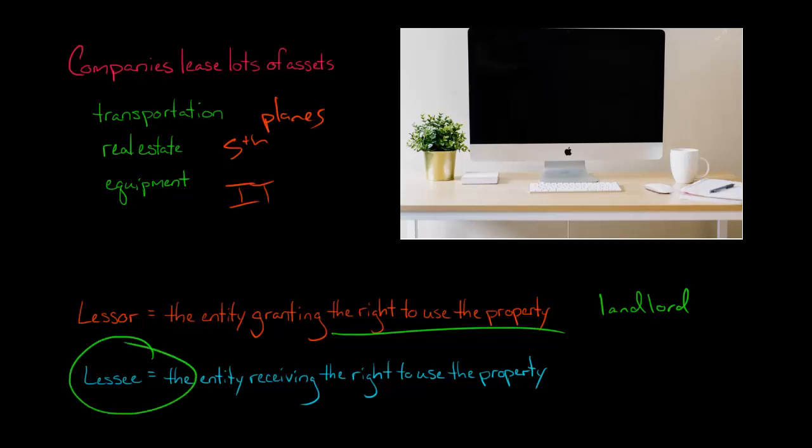And then you would be the lessee. You are receiving the right to use the property. It's the same with a business. If your company is leasing or renting out some Macs or some Dell desktop computers, Dell would be the lessor, and then the lessee would be your company. They are making periodic payments to Dell in exchange for the right to use those Dell desktop computers. We'll talk about all this and a lot more in the videos to come.